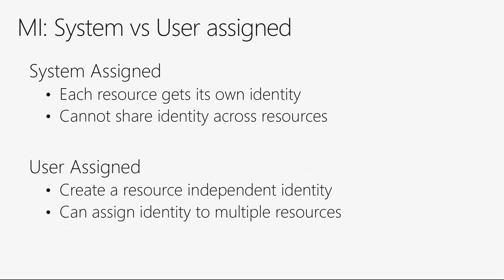Let's talk about some of the mechanics of how we actually implement this in Azure Gov. There are a couple of different kinds of managed identities. We have system-assigned identities and we have user-assigned managed identities. With system-assigned, each resource that is enabled with managed identity gets its own identity. With user-assigned, you create a managed identity in AD and then assign that managed identity to multiple resources.